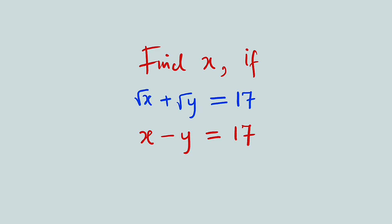Hello, good day viewers. In this tutorial, we are going to find a solution to this simultaneous linear and radical equations. We have two equations. The first one is the radical equation — let's call it equation 1 — and the second one is a linear equation, let's call it equation 2. We want to find the values of x and y that can make these two equations true.